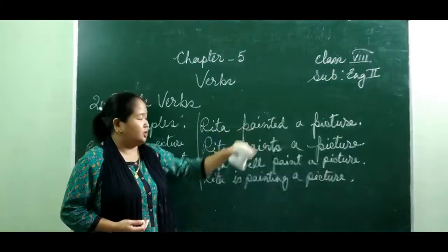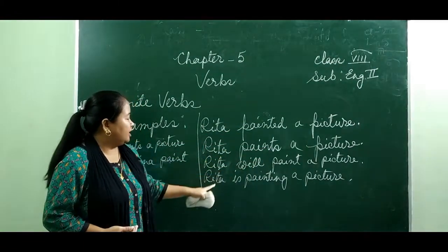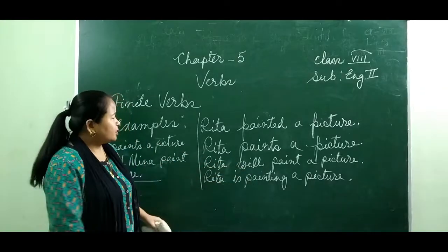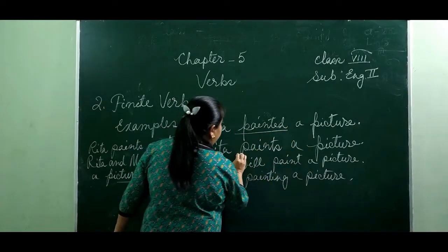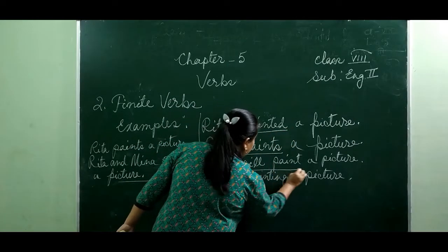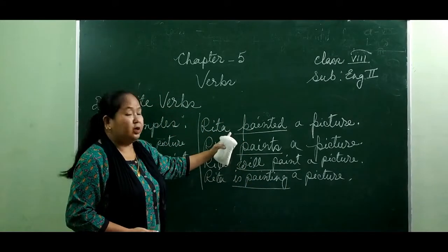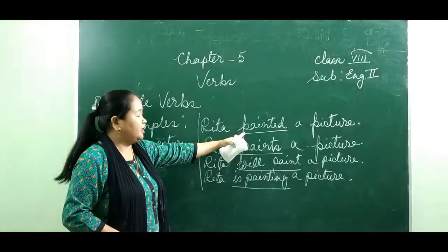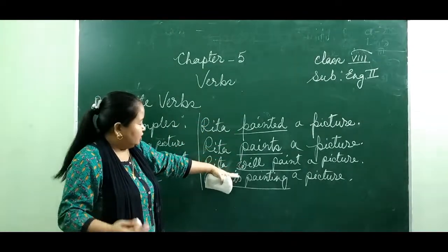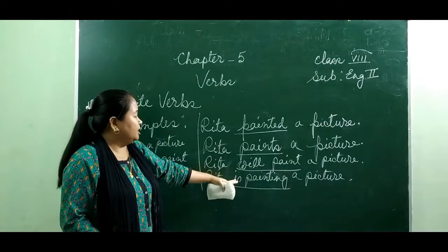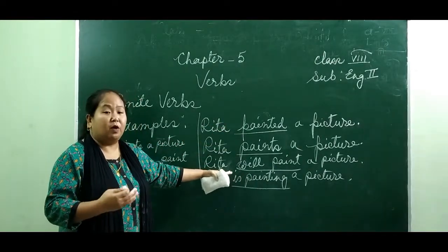Here are examples: 'Rita painted a picture,' 'Rita paints a picture,' 'Rita will paint a picture,' 'Rita is painting a picture.' The verb changes according to the time of action: 'painted' — past, 'paints' — present, 'will paint' — future, 'is painting' — present continuous. The verb changes according to the time of action.